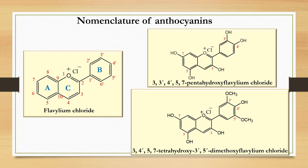Now if we talk about the nomenclature of anthocyanins, this is the basic structure which is present in all of the compounds. We can see here that we have three rings — A, B, and C — and we number the positions as 1, 2, 3, 4, 5, 6, 7, 8, 9, and 10.